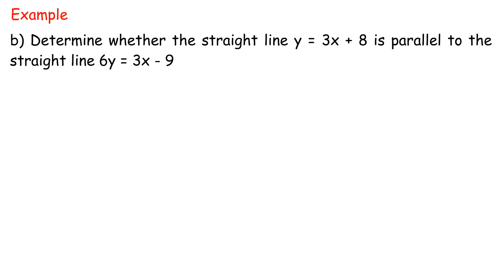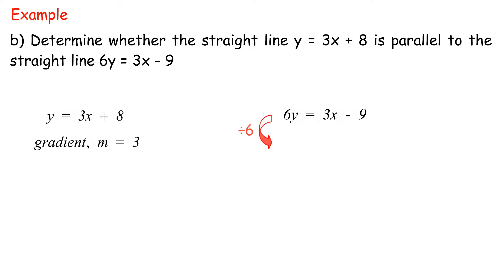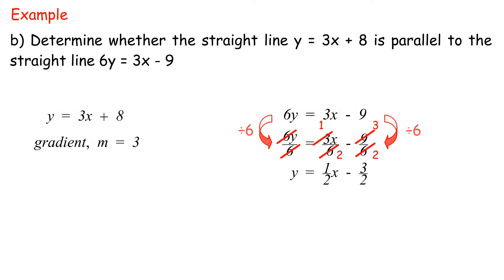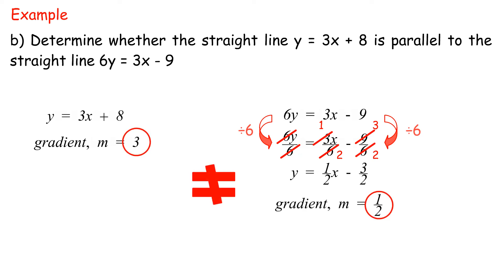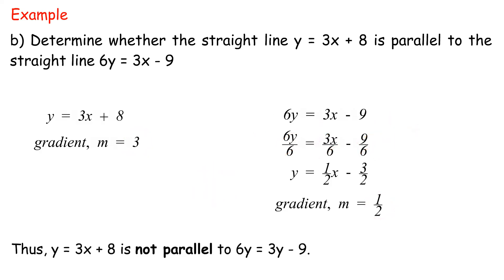Example b: Determine whether the straight line y equals 3x plus 8 is parallel to 6y equals 3x minus 9. For y equals 3x plus 8, gradient equals 3. Dividing 6y equals 3x minus 9 by 6 gives y equals half x minus 3 over 2, gradient equals half. The gradients are not equal, thus y equals 3x plus 8 is not parallel to 6y equals 3x minus 9.